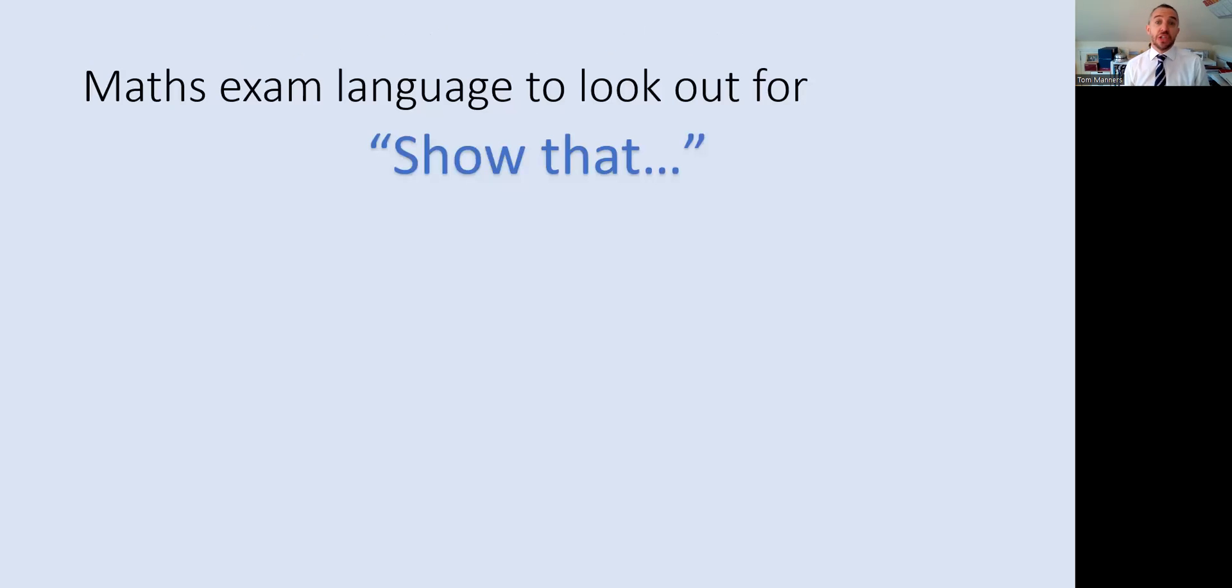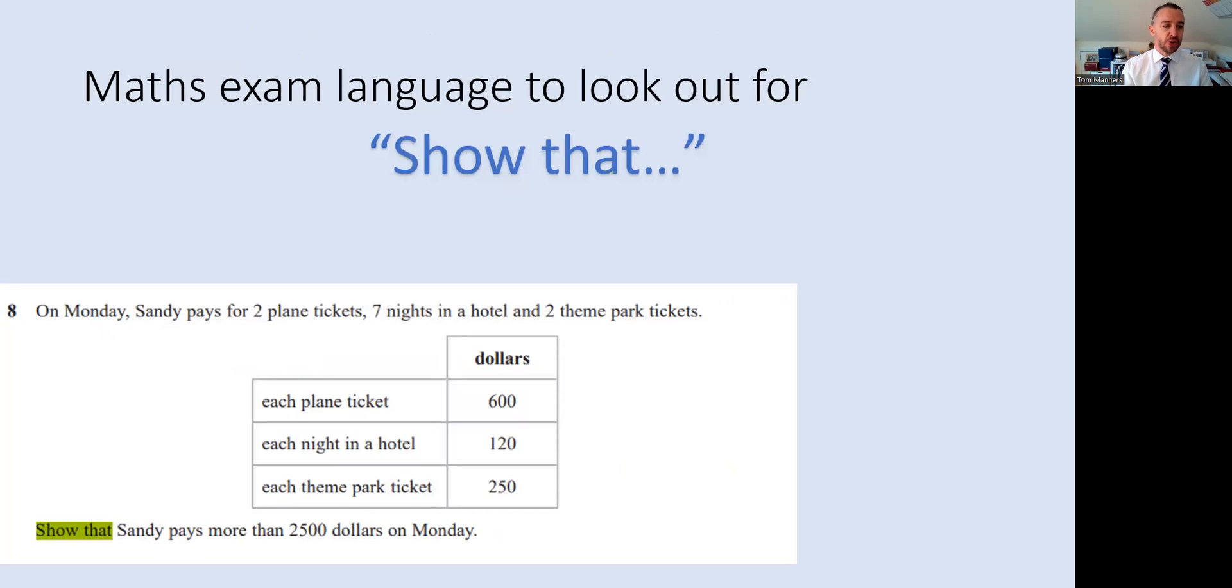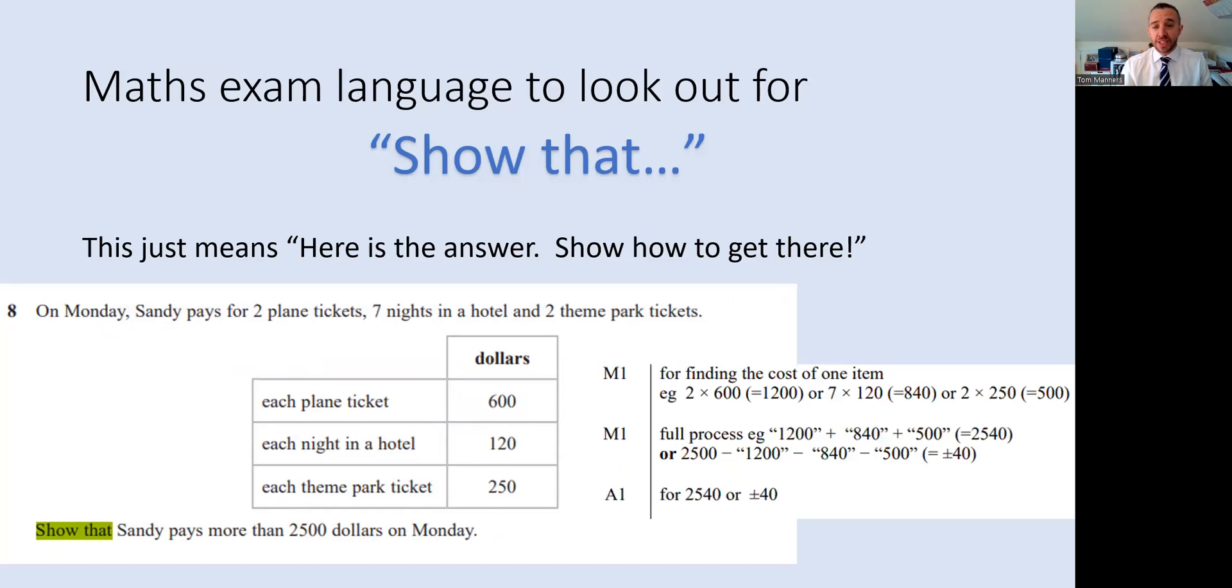There's some exam language to look out for. If you see this language, show that. Here's an example of a question. Show that Sandy pays more than two thousand five hundred dollars on Monday. What that means is here's the answer. It's more than two thousand five hundred. Just show how to get there. Looking at the marks, as you can see, two method marks and that one answer mark there.